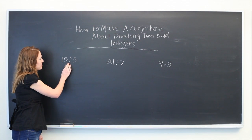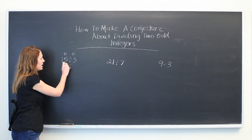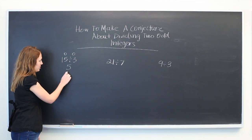So 15 divided by 3 is 5. So two odd integers dividing them by each other, the answer is odd.